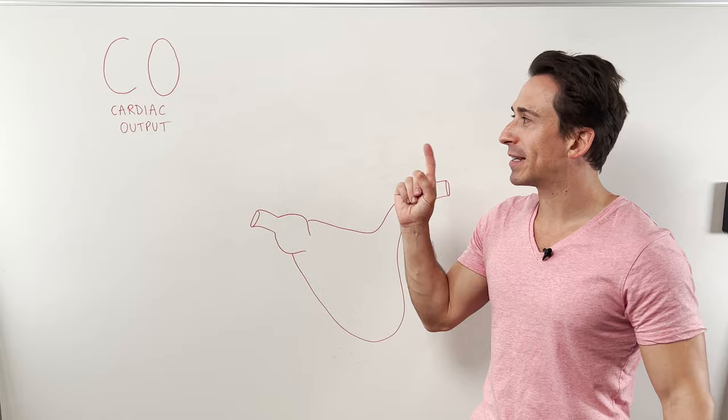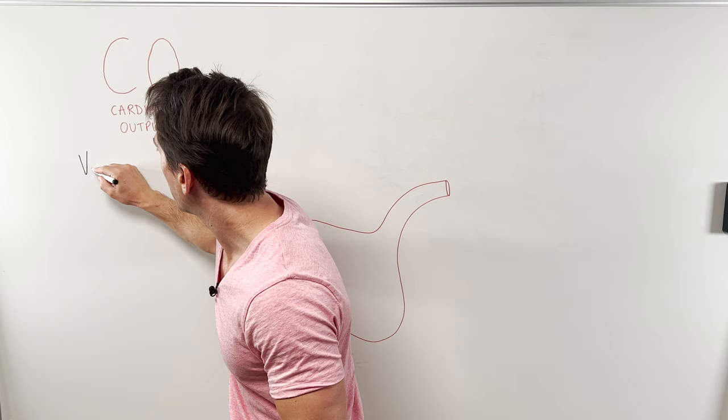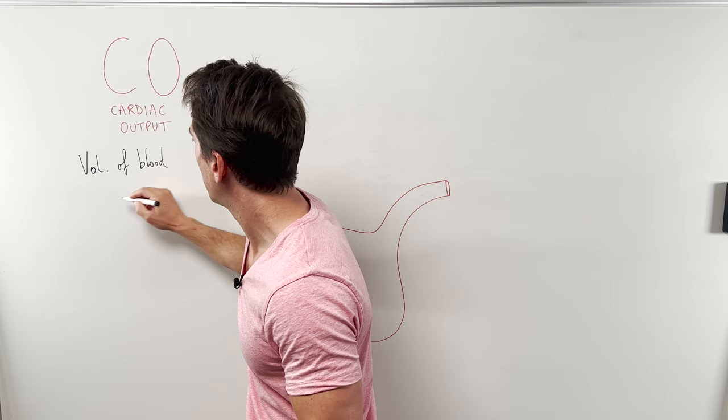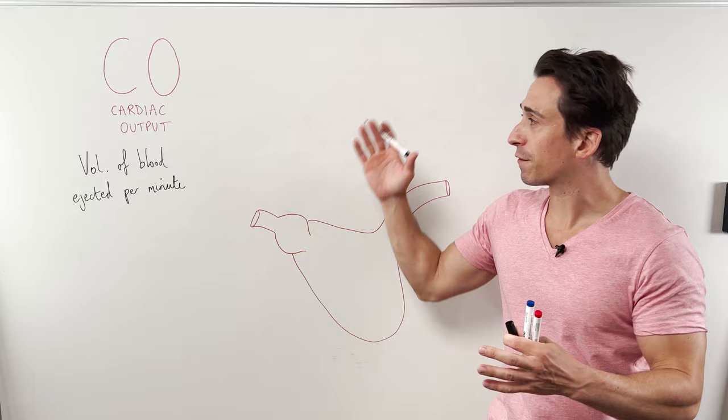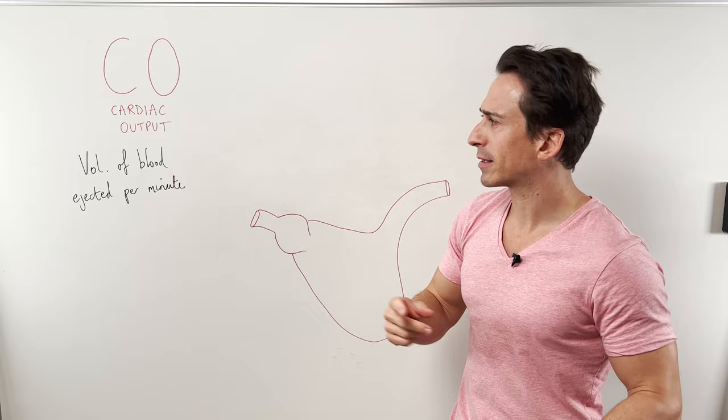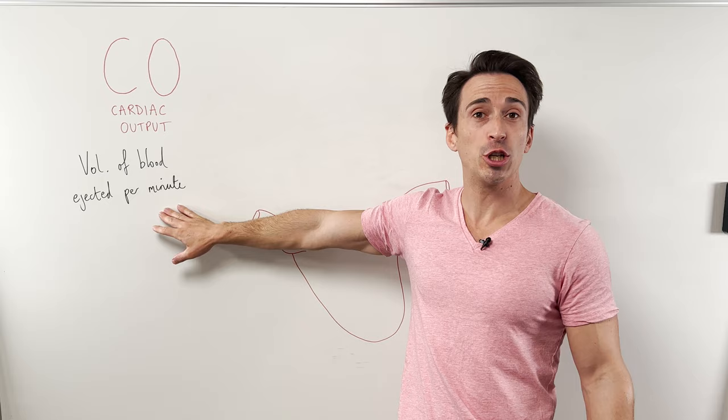Let's first begin with a definition. What is cardiac output? Simply, it is the volume of blood ejected from the heart per minute. You can see that there are two factors here: the volume of blood that's ejected and how many ejections per minute.